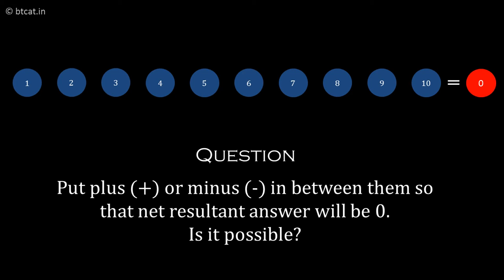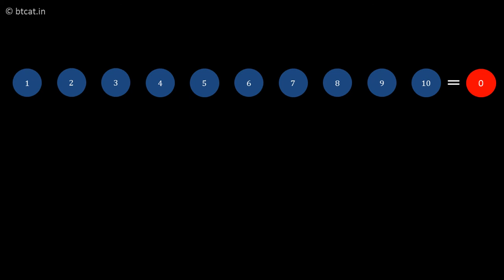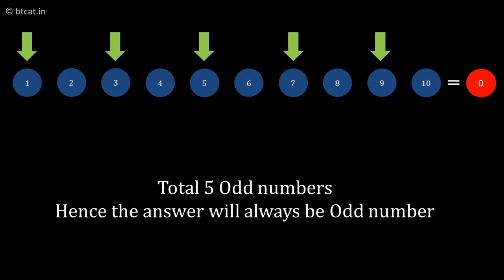The answer is that it's never possible. There are five odd numbers: 1, 3, 5, 7, and 9. So whatever we do—plus or minus—the net answer will always be odd, and therefore we can never get zero.